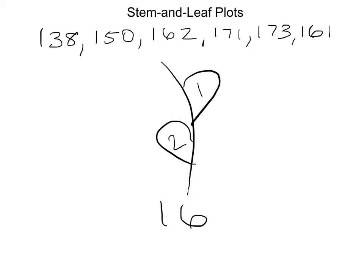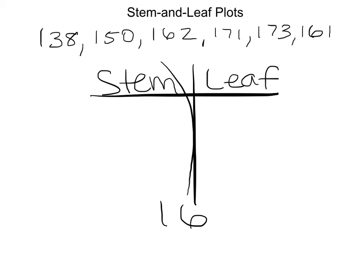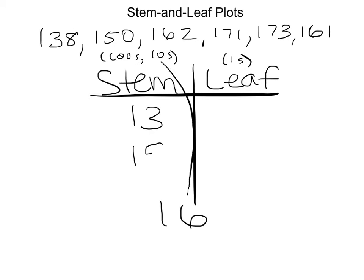Now we can see what this would look like when we actually plot these in a table. Our stem in this case is going to be numbers in the 100s place and the 10s place. Our leaf will be numbers in the 1s place. I'm going to start with the lowest number as I set up my stems, so I have 13, 15, 16, 17.